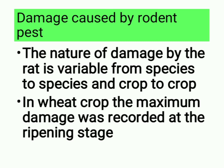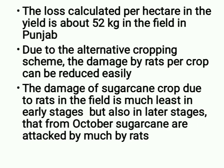Damage caused by rodent pest: the nature of damage by the rodent or rat is variable from species to species and crop to crop. In wheat crop, maximum damage was recorded at the ripening stage. The loss calculated per hectare in yield is about 52 kg in the field in Punjab. Due to the alternative cropping scheme, the damage by rats per crop can be reduced easily. The damage of sugarcane crop due to rats is much less in early stages but increases from October onwards.